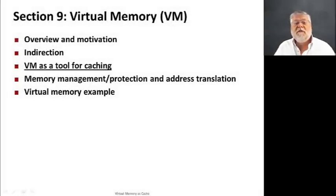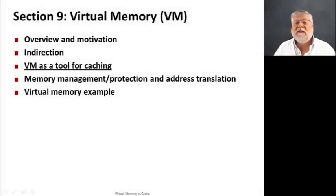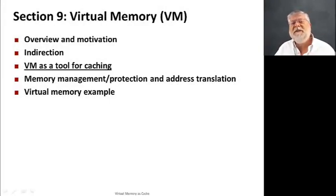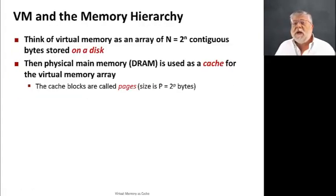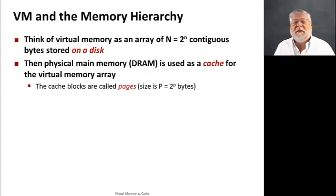Now that we've seen how indirection can help us with virtual memory, let's see how we use a VM as a tool for caching. A different kind of cache than we've seen before, but a cache nonetheless. So let's think about virtual memory's place in the memory hierarchy.